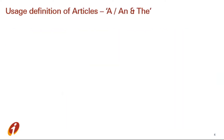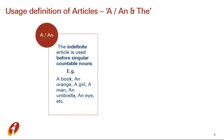Now let's see the definition of 'a' and 'an'. The indefinite article 'a' or 'an' is used before a singular countable noun. For example: a book, an orange, a girl, a man, an umbrella, an eye, etc. We can easily count book, orange, girl, eye, and so on.